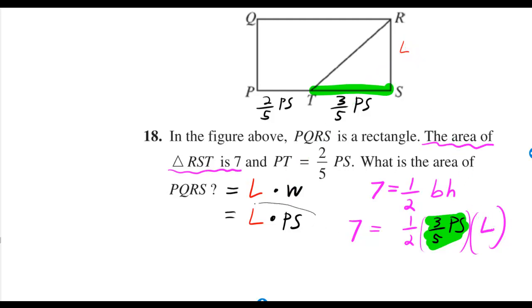Well, we're looking for L times PS, but if you look at this other equation, it does have L times PS within it. So we just need to get rid of the 1/2 and get rid of the 3/5. You do that by multiplying both sides by the reciprocal of both 1 over 2 and 3 over 5. So you get 2 over 1 times 5 over 3 times 7 is equal to PS times L, which is what we're looking for. So we just have to calculate this.